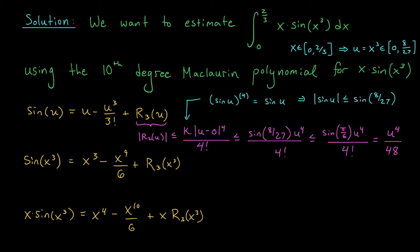If you're willing to settle for something a little less accurate, you could simply take k = 1, giving a bound of u⁴/24, which is still a very reasonable approximation. We've shown that the error term for sine of u is bounded in absolute value by u⁴/48. Replacing all u's with x³, we get a bound for the error term for sin(x³): |r₃(x³)| ≤ x¹²/48.